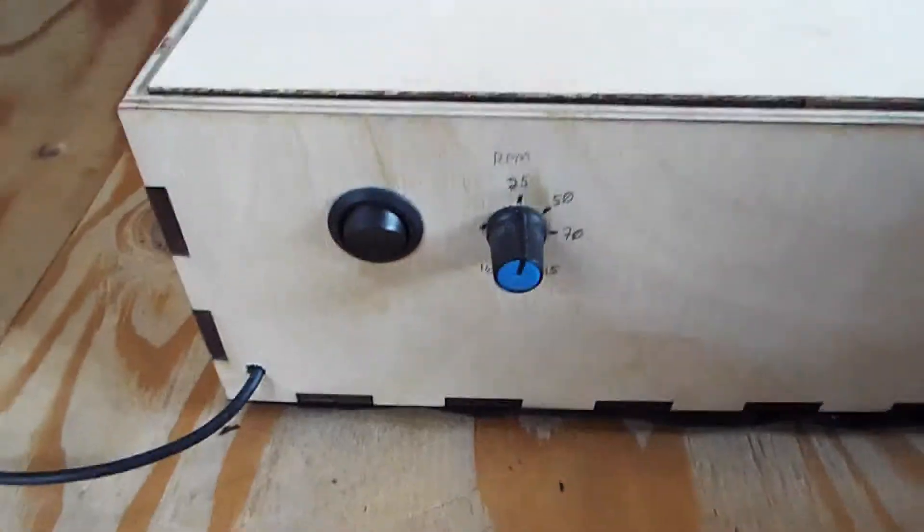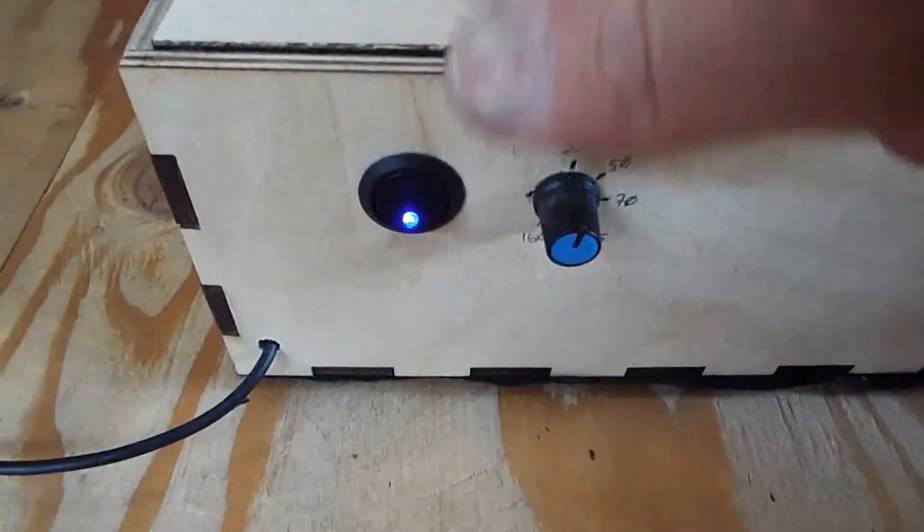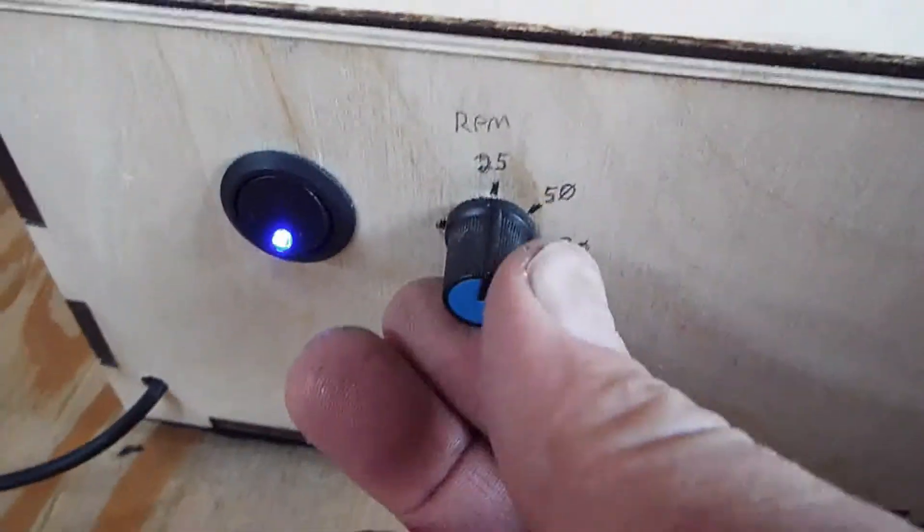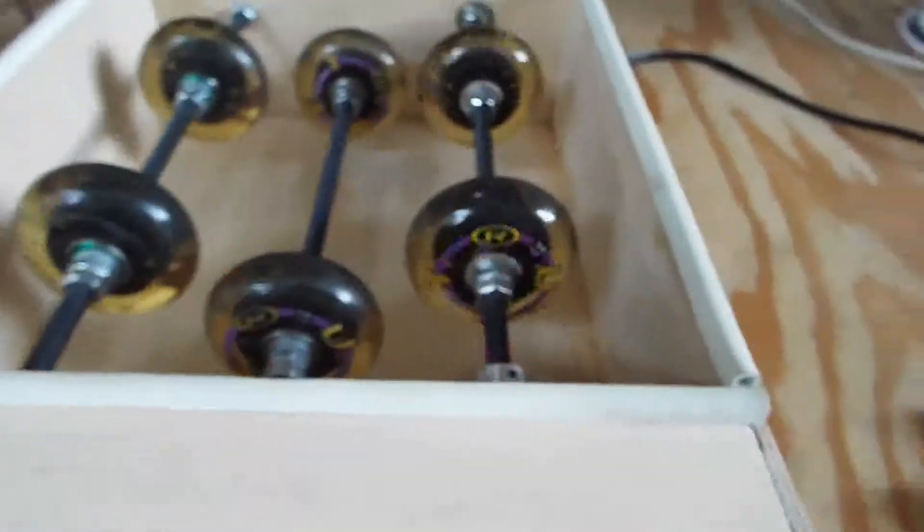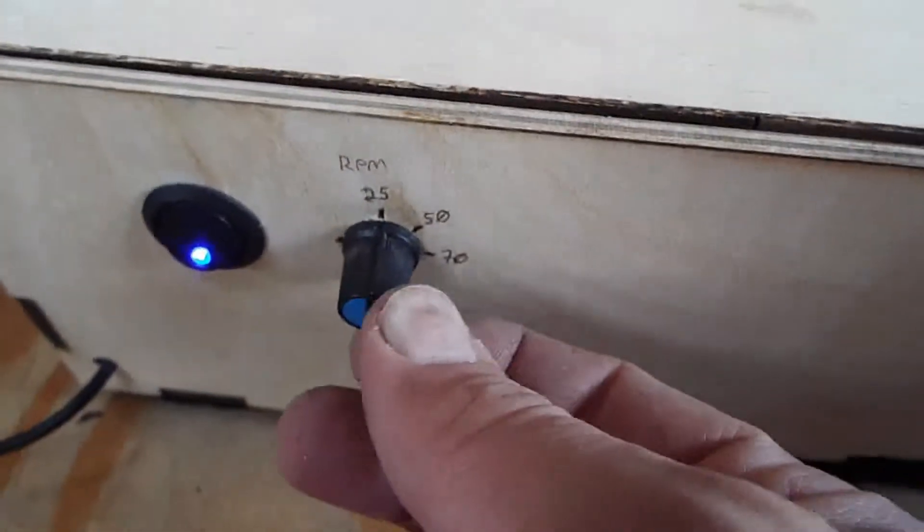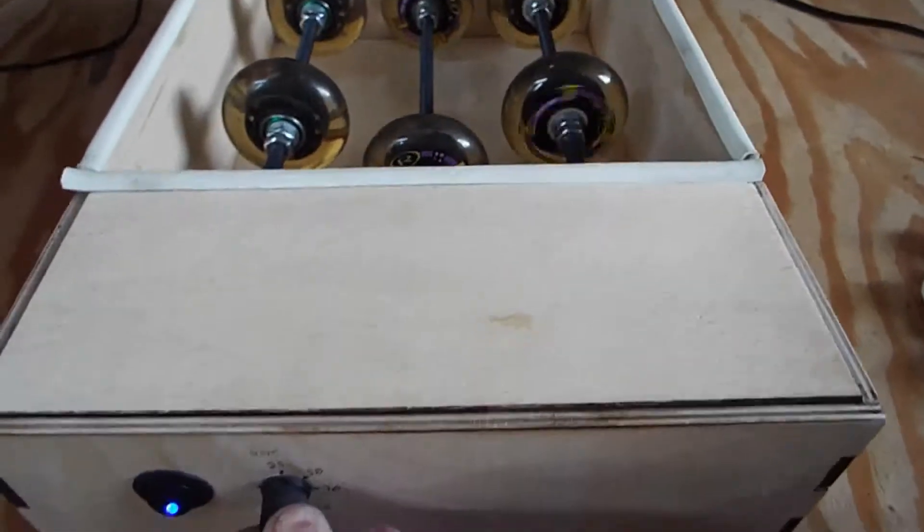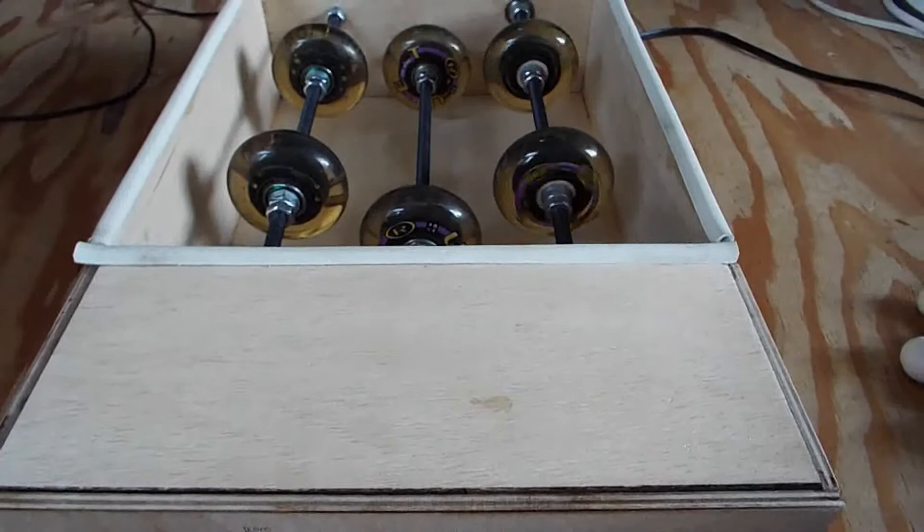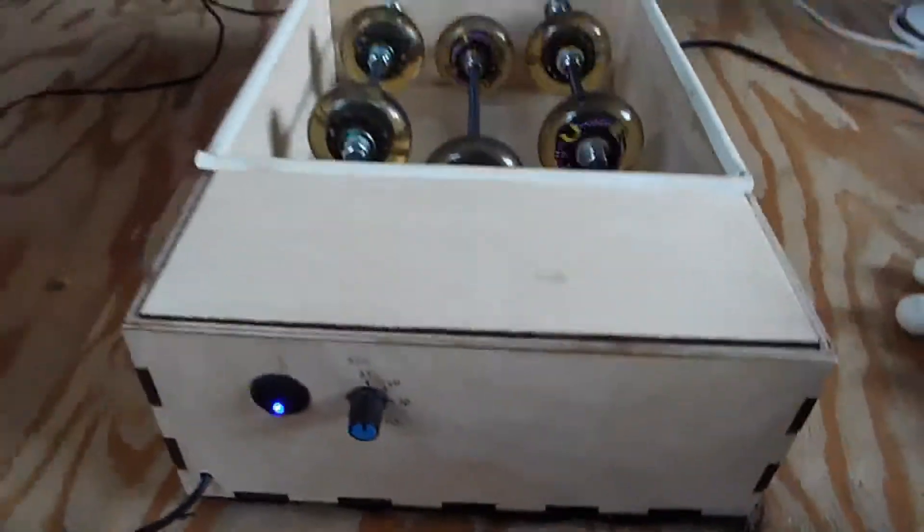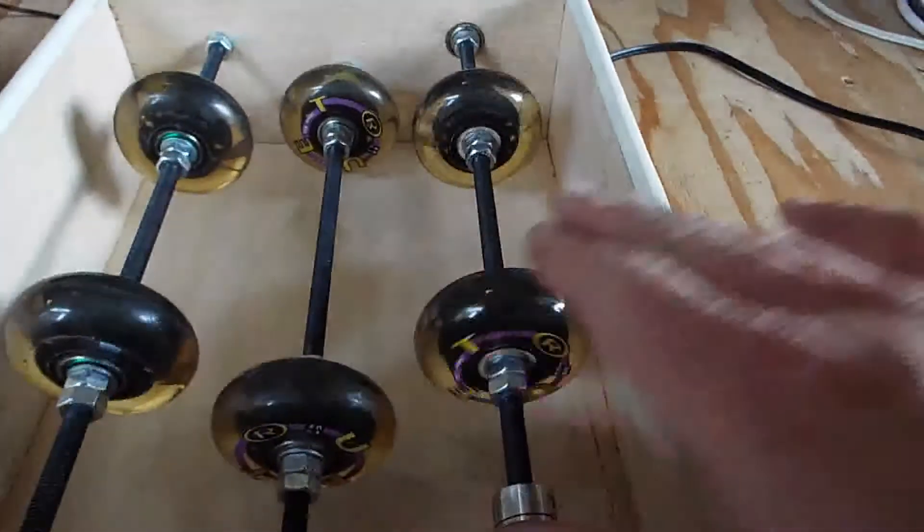So I have an on-off switch on this. And then I have a PWM control that controls the motor speed. Right now I have it at 25 RPM, but I can go all the way up to 160 RPM with this. So if I turn this knob... The 160 RPM is the jar RPM. That's not the shaft RPM here.